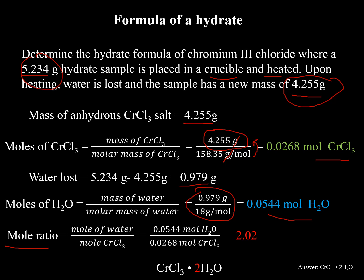And the third step is to find the mole ratio between the two. So we take the moles of water on top, the moles of CrCl3 on the bottom, and we come up with 2.02. So going back to the original question, determine the hydrate formula of chromium chloride. It would be CrCl3·2H2O. And you'll be doing this in your lab as well.